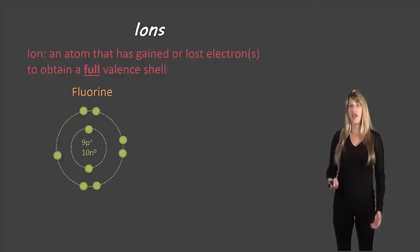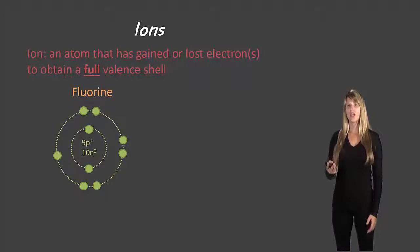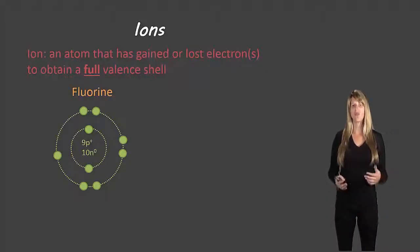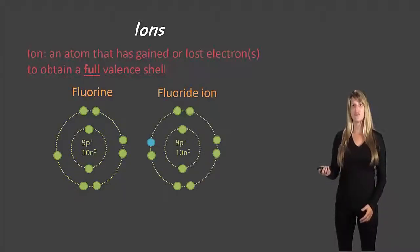So here we have fluorine. It has two shells and the outer shell has seven electrons. Now it can either gain one electron to get eight—eight will be a full valence shell for a second shell—or it could lose seven electrons. In this case, gaining that one electron will be much easier than losing seven electrons. So here, the fluoride ion has one extra electron.